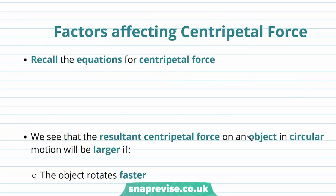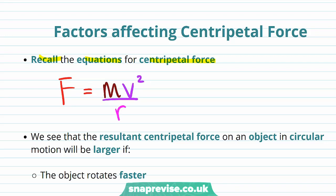Now we're going to look at some factors that affect centripetal force. Let's recall the equations for centripetal force. Centripetal force F is equal to mass M times instantaneous velocity squared divided by radius. Centripetal force is also equal to mass times radius times angular velocity squared.